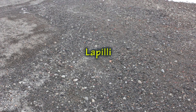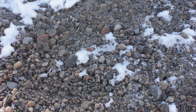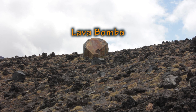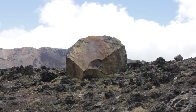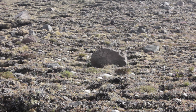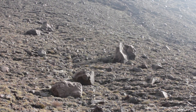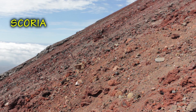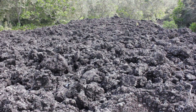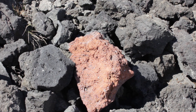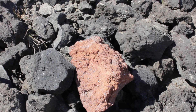Lapilli is debris between 2 and 64 millimeters in diameter. Lava bombs is debris more than 64 millimeters in diameter. Bombs rarely land more than 4 to 5 kilometers away. Scoria is a pyroclastic rock which has been rapidly cooled in flight and so is pockmarked by air bubbles. The darker the scoria, the richer it is in iron content.